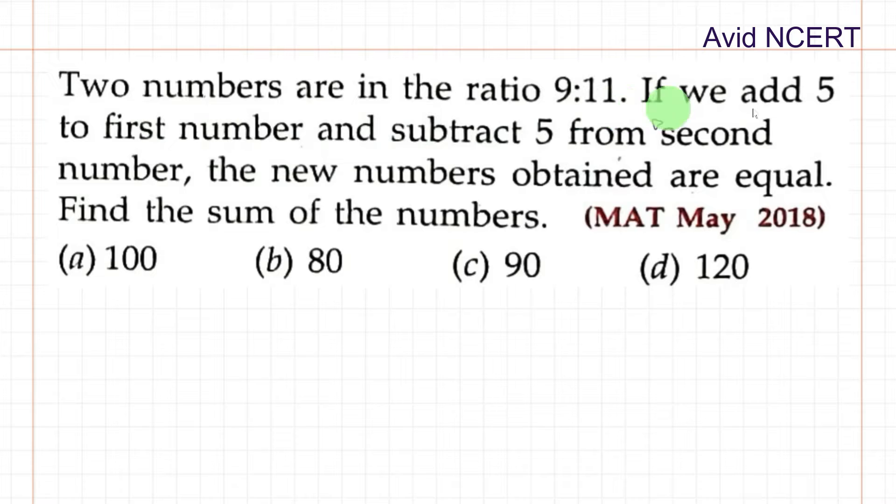Two numbers are in the ratio 9 is to 11. If we add 5 to the first number and subtract 5 from the second number, then the new numbers obtained are equal. Find the sum of the numbers.